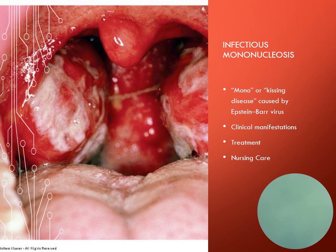There is no cure for mono. Treatment is based on the symptoms and may include analgesics or antipyretics, definitely fluids, a soft-bland diet if the throat is involved, corticosteroids, bed rest, and avoiding contact sports — because if they do have an enlarged spleen, it could potentially cause a rupture.